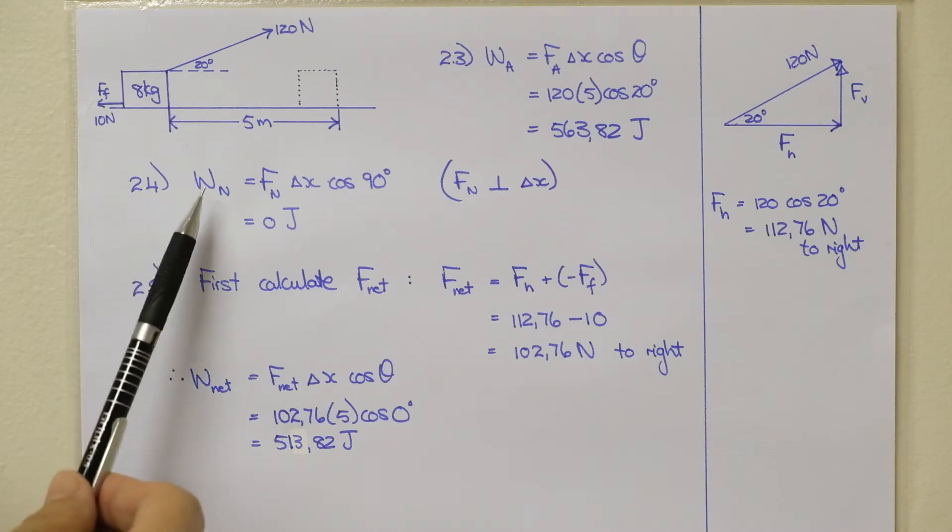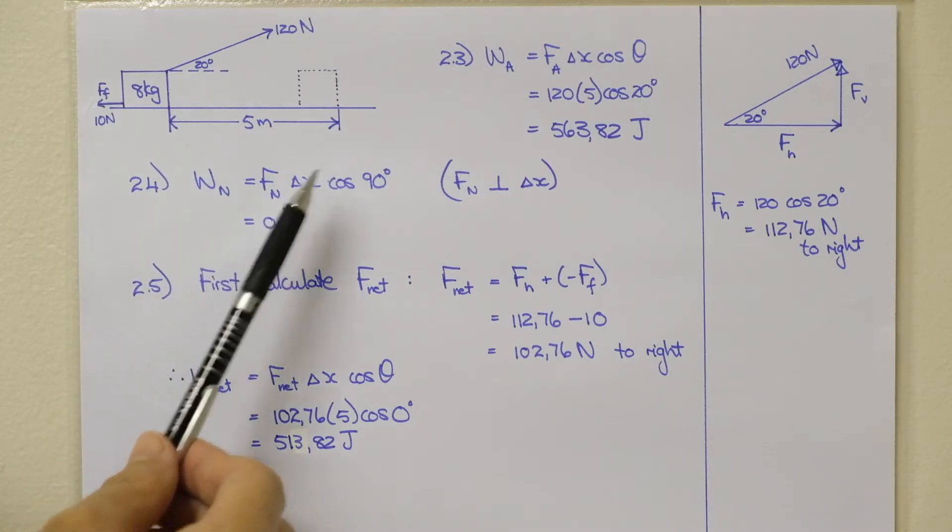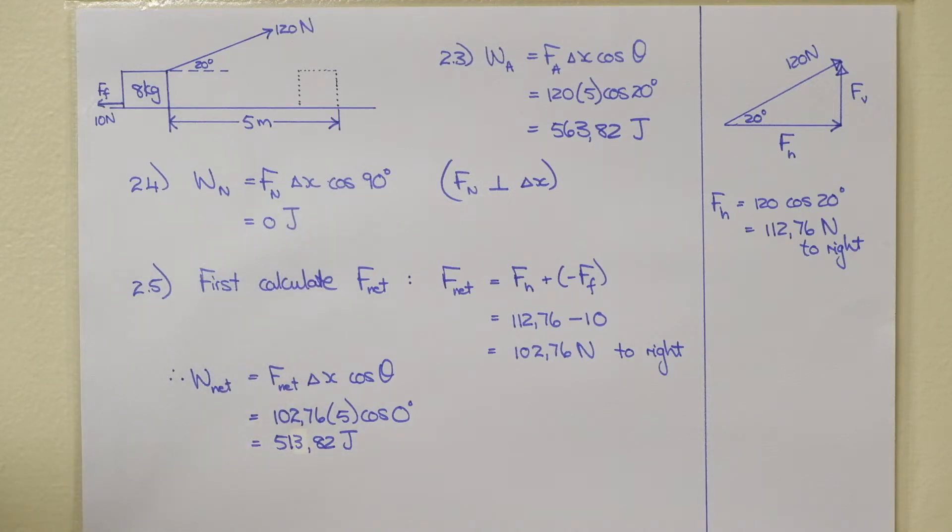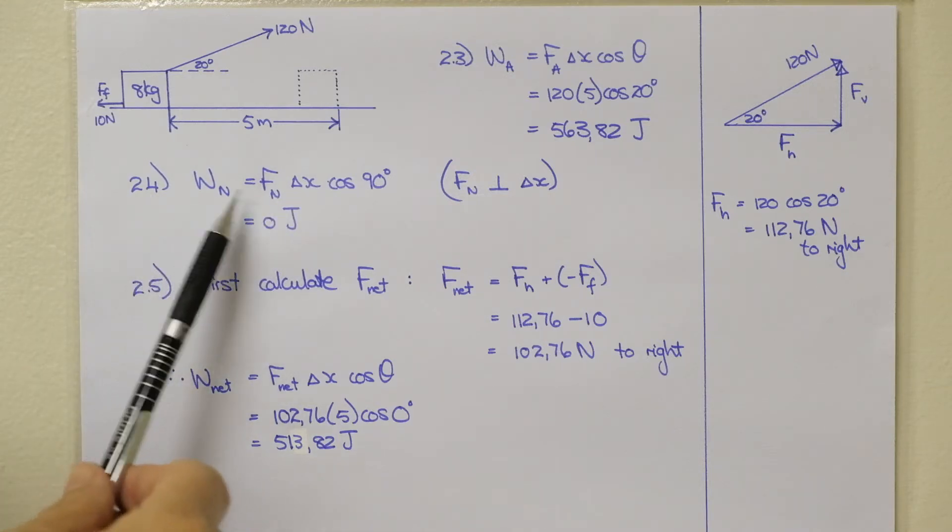Then in 2.4, the work due to the normal is your normal force times your displacement times cos of 90. And as we have already said, cos of 90 is zero. So I'm not even going to substitute values in there. A question like that would count one or two marks.